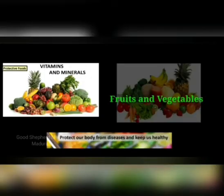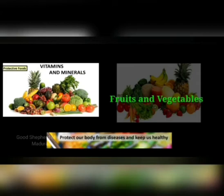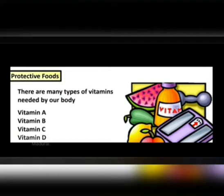Now let us see about protective foods. Vitamins and minerals are the protective foods. Fruits and vegetables have a large number of vitamins and minerals. Thus vitamins and minerals protect our body from diseases and keep our body healthy. There are many types of vitamins needed by our body, mainly vitamin A, B, C and D.